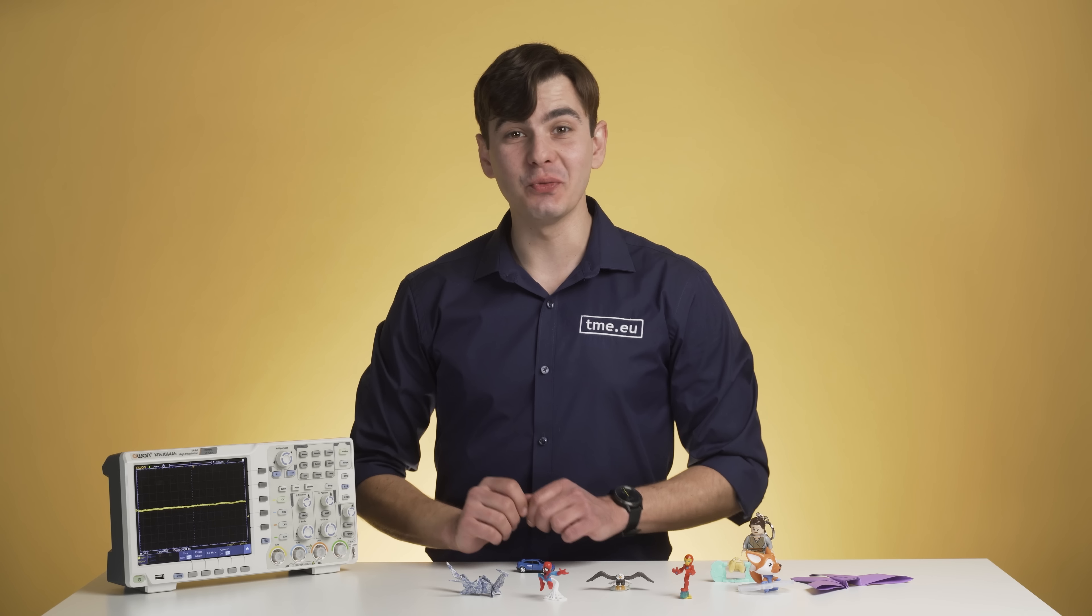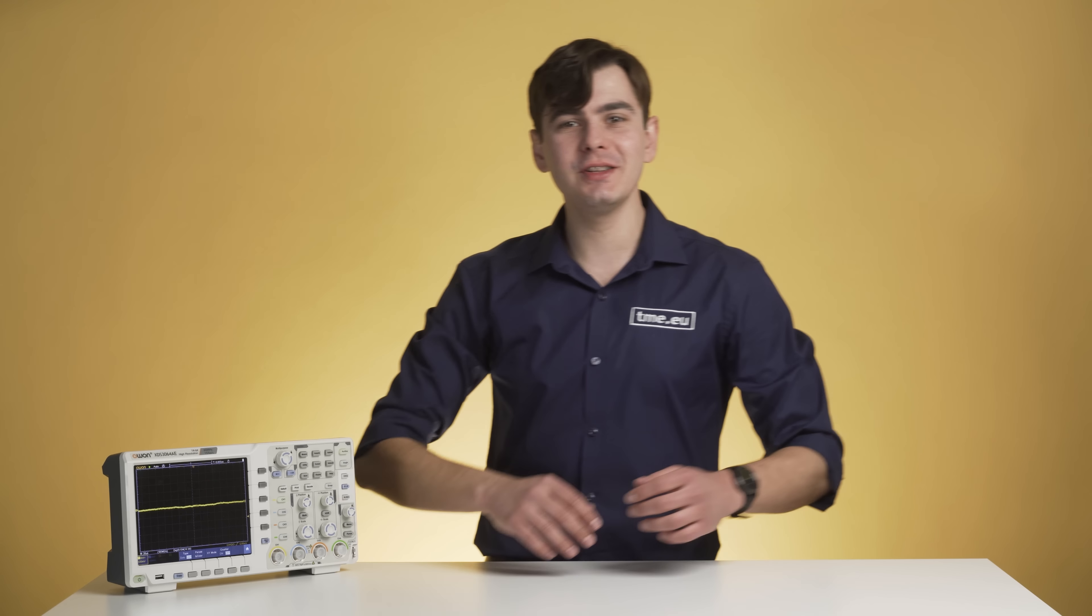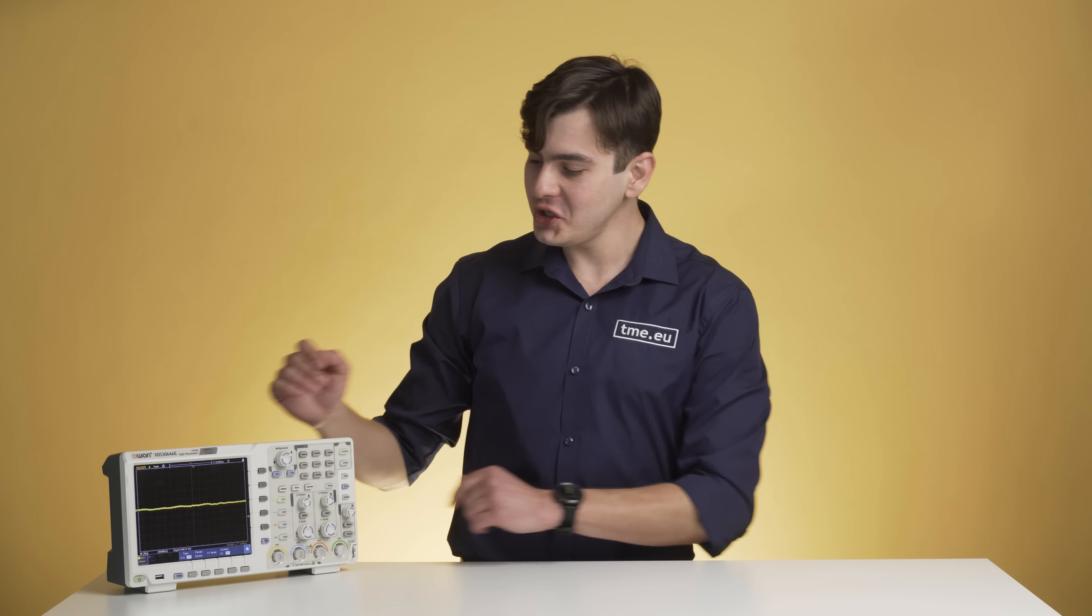One day you've finally decided that you want to stop playing with kids' toys and get yourself a four-channel 14-bit oscilloscope like this Owen. Congratulations, you broke your piggy bank, went to TMEU and ordered one. Now what? Well, here are a few tips that will help you to maintain your scope healthy and your measurements accurate.